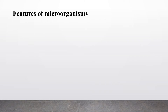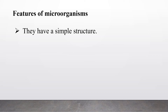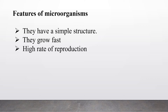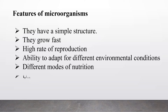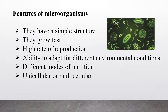Now we will see what are the features of microorganisms. Microorganisms have a simple structure and they can grow very fast. They have a high rate of reproduction and they can adapt to different environmental conditions. They have different modes of nutrition. We can see there are unicellular microorganisms and multicellular microorganisms in the environment.